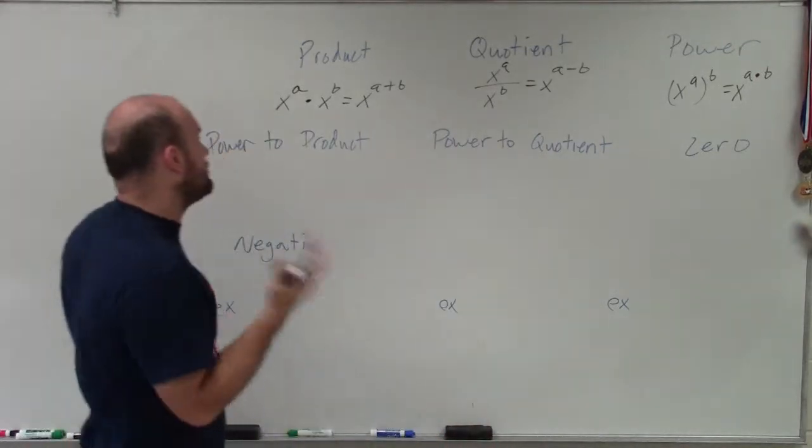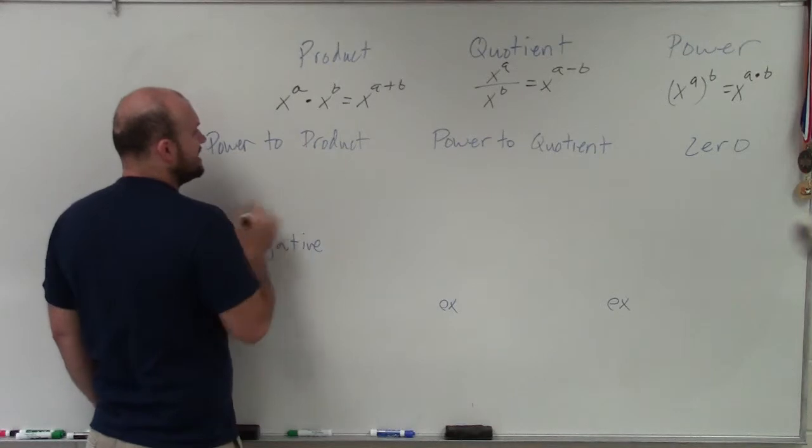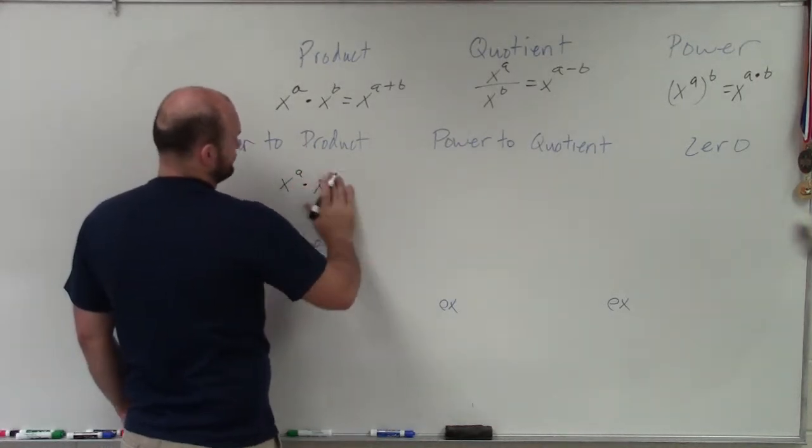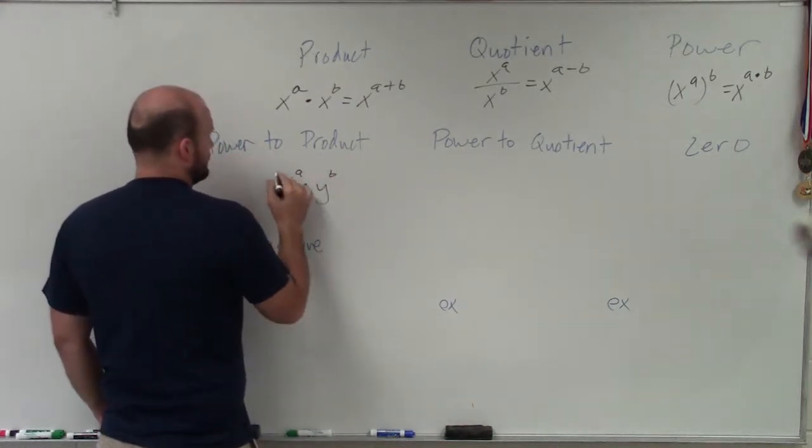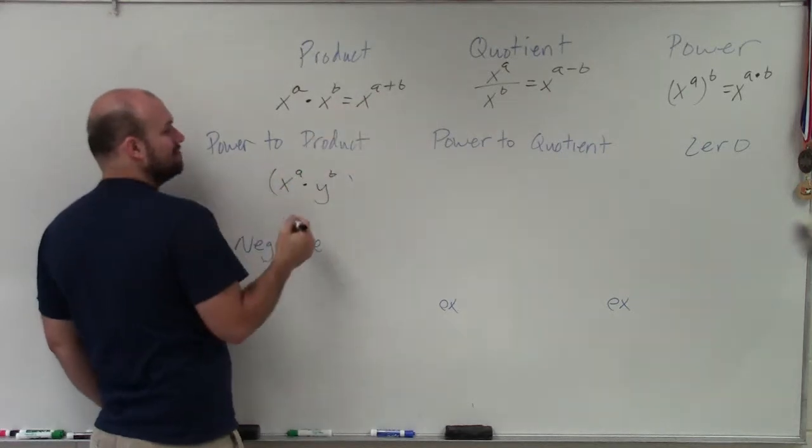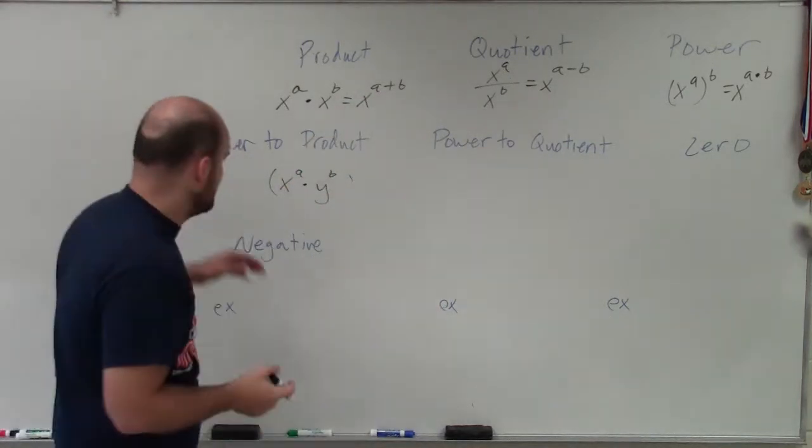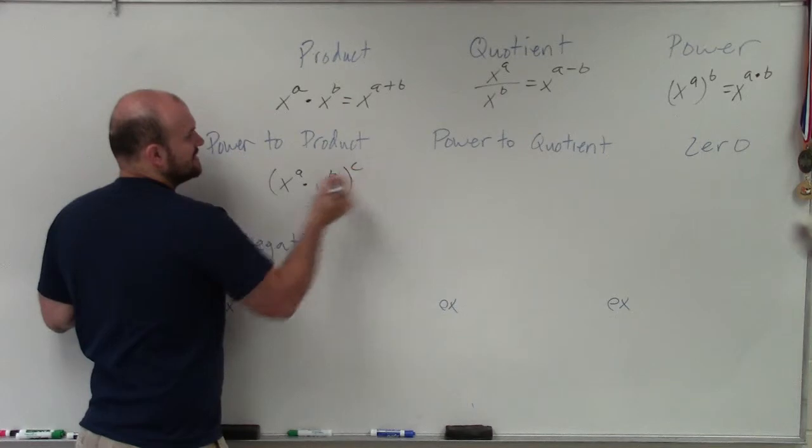The next thing is the power to product rule. The power to product rule basically states that any time I have x to the a times y to the b—I don't want to use x for both because then I can obviously combine them—so let's say I have two exponents and a number in there, and let's raise that to the c power.